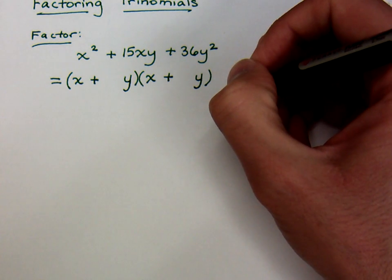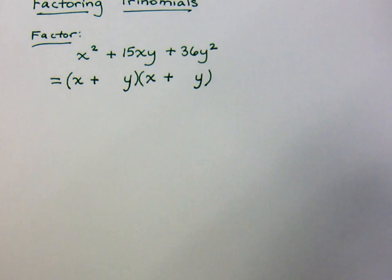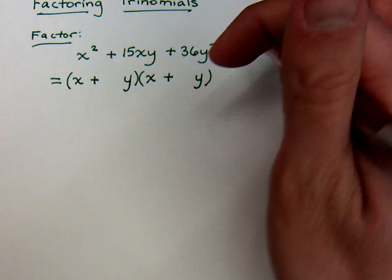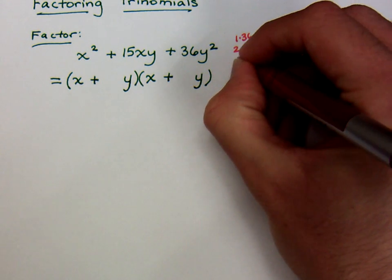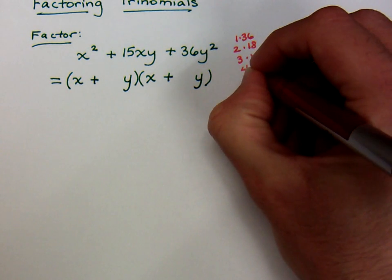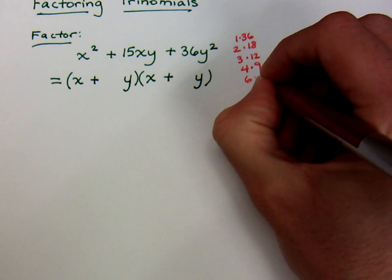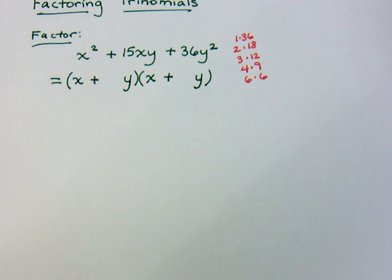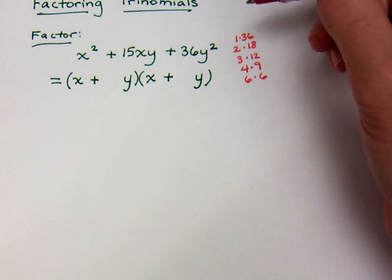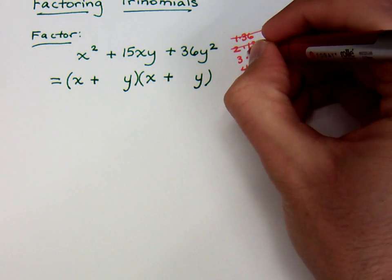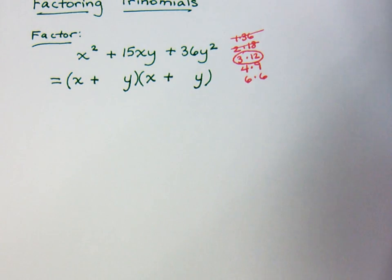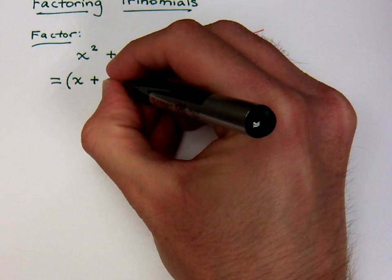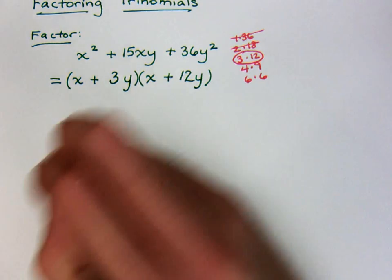Now that you want to worry about the 36, how can you break down 36 to get 15? Well, let's think about the factors you have for 36. There's 1 and 36, 2 and 18, 3 and 12, 4 and 9, and 6 times 6. Well, there's only one of these guys that's going to work, because you have to add to get 15. It's not that one, it's not that one. So, let's think about the 3 and 12. That's what we need to use. That will give us the 15. So, we'll make this a 3y and 12y.